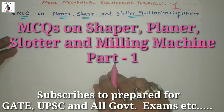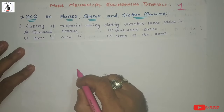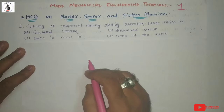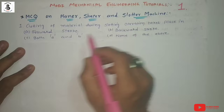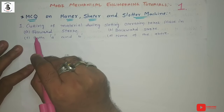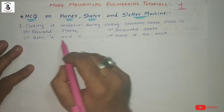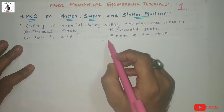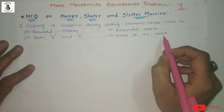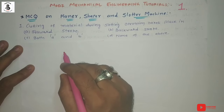Now we will start with question number one: Cutting of material during slotting operation takes place in — option A: forward stroke, option B: backward stroke, option C: both A and B, and option D: none of the above.